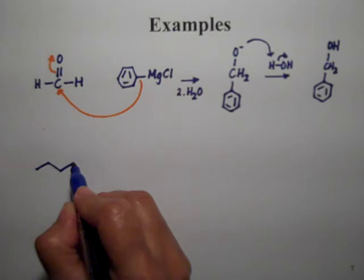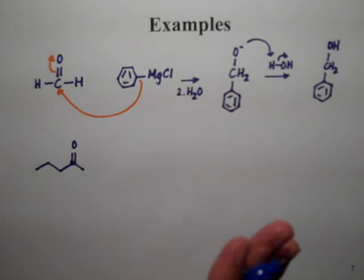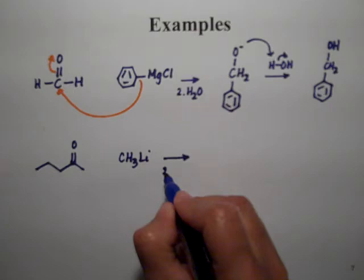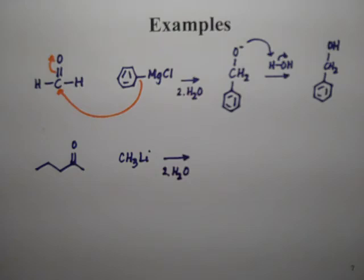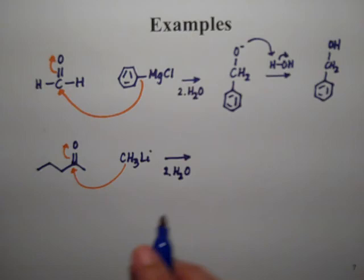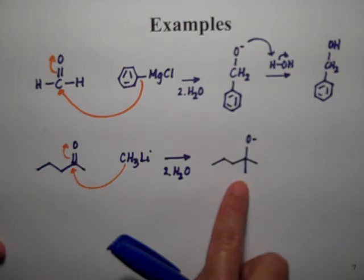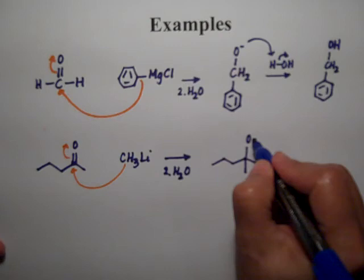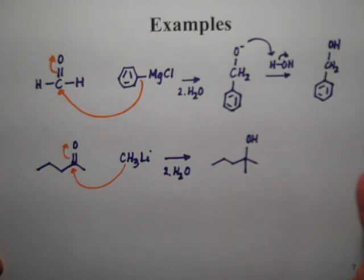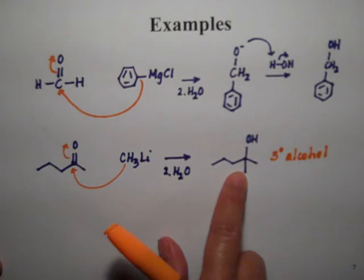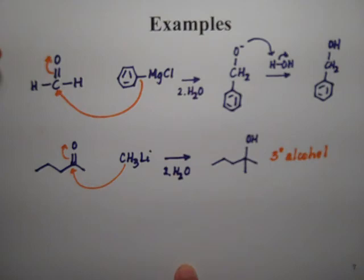If you take a ketone — let's take 2-pentanone — and use an organolithium for variety, we'll use methyllithium. You add methyllithium and then add water to the reaction. The methyl attacks the carbonyl, forms the tetrahedral intermediate. Now I have two methyls, the oxygen is negative, and there are no good leaving groups — carbons are not leaving groups. When I add water, the oxygen picks up the hydrogen. This gives a tertiary alcohol. Whenever you attack a ketone with a Grignard or organolithium, you add a third carbon group to the carbonyl and get a tertiary alcohol.